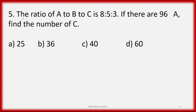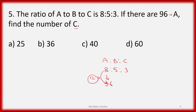Question number five: the ratio of A to B to C is 8 to 5 to 3. If there are 96 of A, find the number of C. Write the ratio as 8:5:3. Since A corresponds to 96, multiply each part by 12: B becomes 60 and C becomes 36. So the number of C is 36.